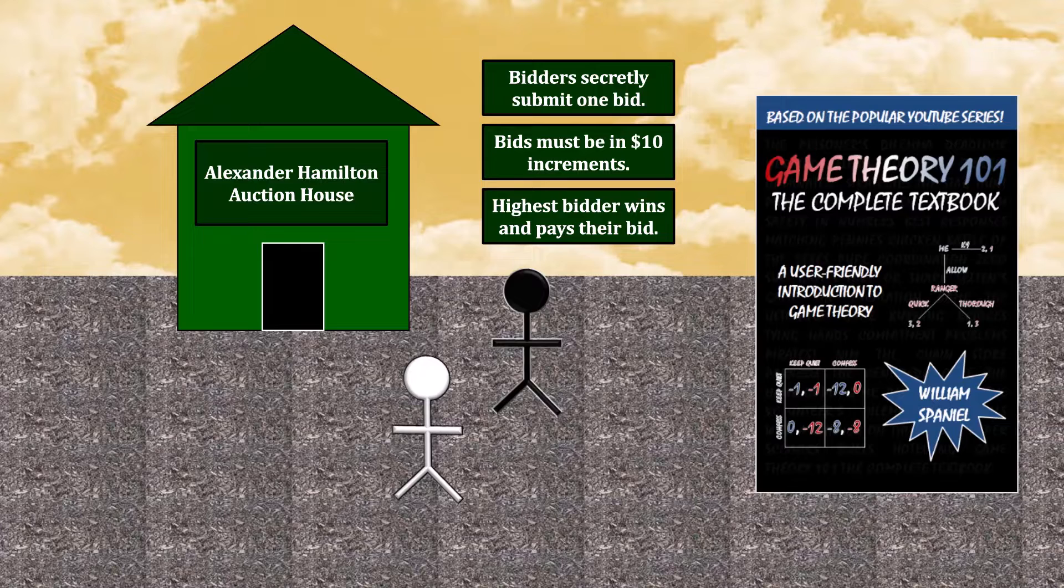This is known as a first price auction, because the winner of the prize is the person who bid the most, and they pay that first highest price.